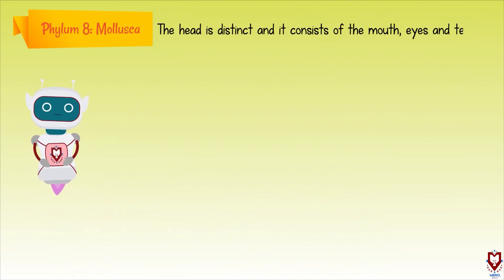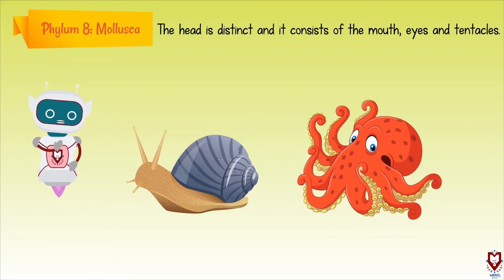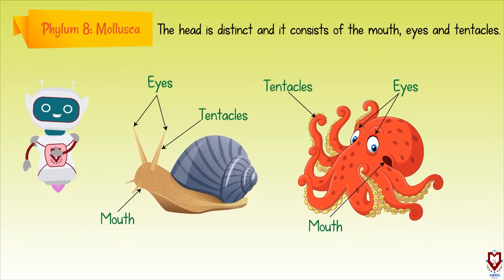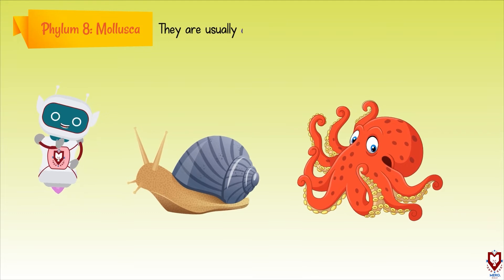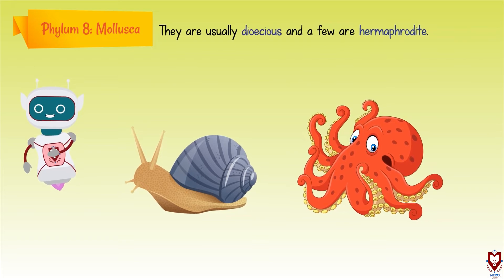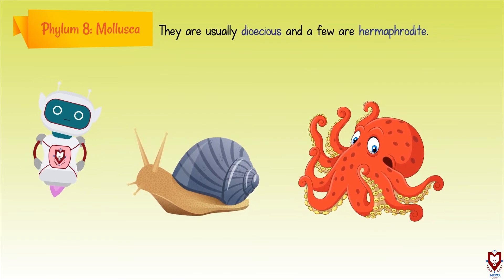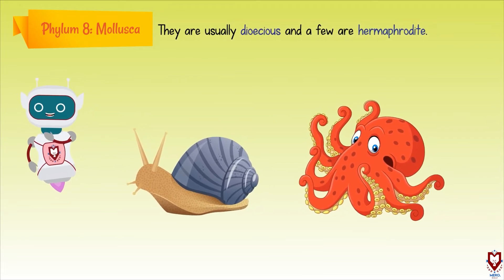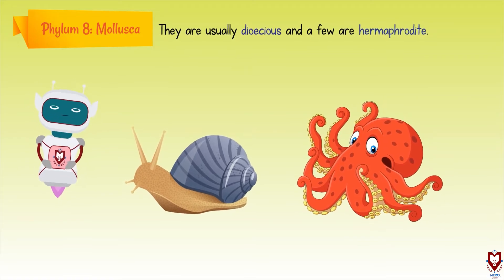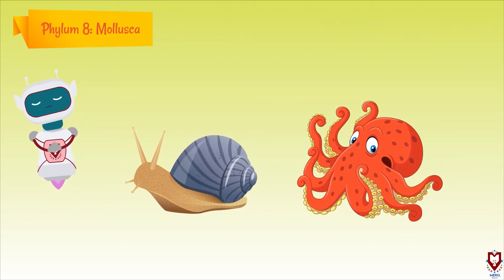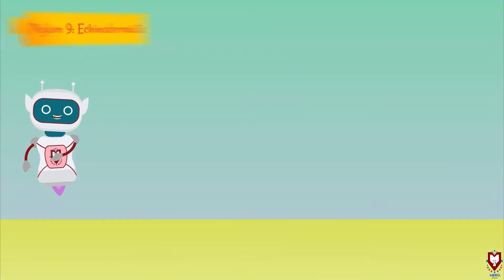The head of Mollusca is distinct and it consists of the mouth, eyes, and tentacles. They are usually dioecious and a few are hermaphrodite. This was the phylum Mollusca. The next and last phylum is Echinodermata.